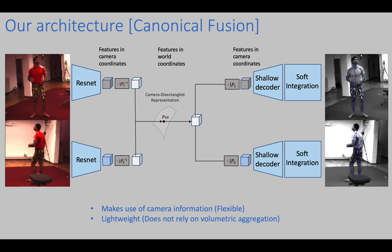We propose to fuse multi-view input in latent space through feature transform layers, conditioning features and camera transforms to learn a disentangled representation of 3D pose.